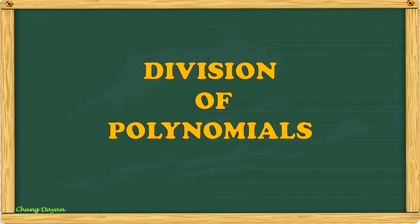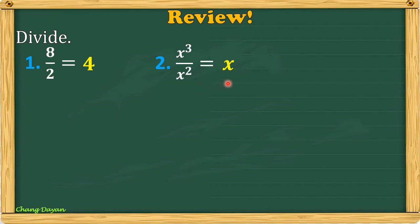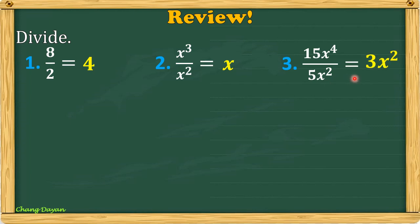Good day everybody. For today's lesson we'll have division of polynomials, but first let us have a review. Divide 8 by 2 — the answer is 4. Next, divide x cubed by x squared — the answer is x. Number 3: 15x to the 4th power divided by 5x squared, and our answer here is 3x squared.